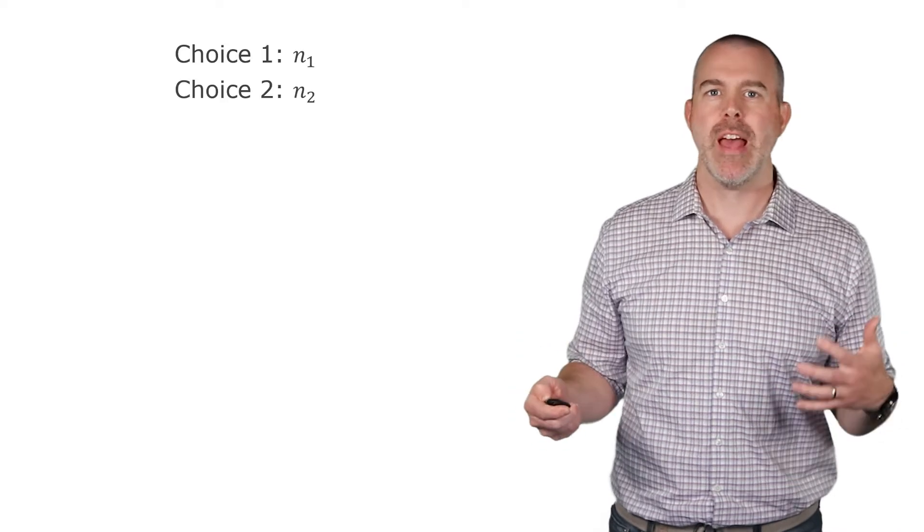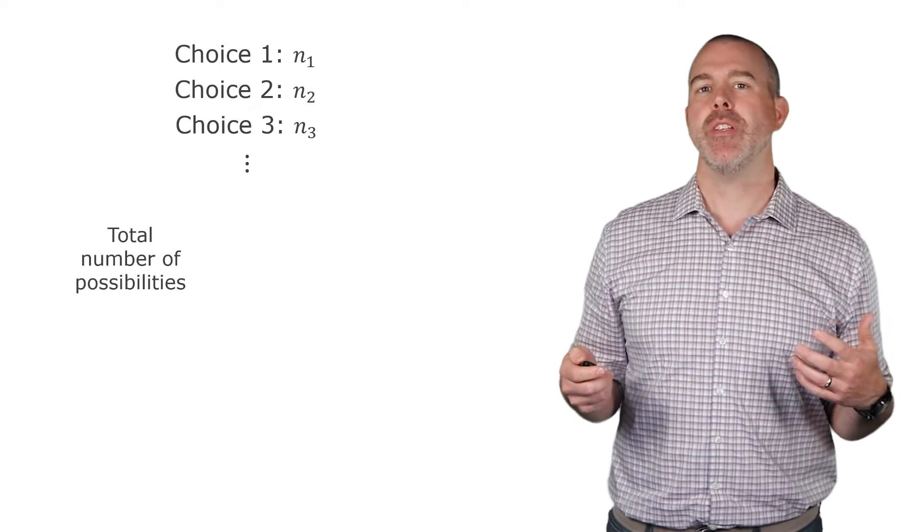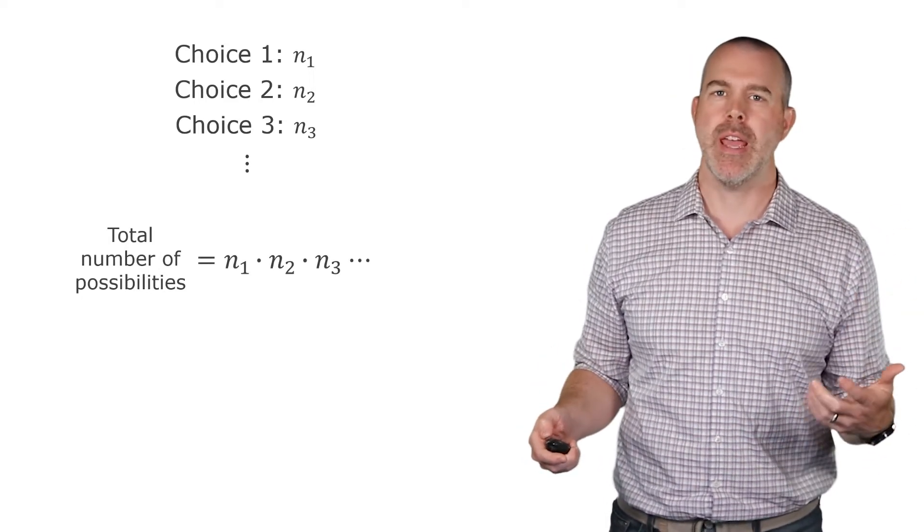If we wanted to generalize this, say we have choice one, there's n sub one ways to do that. Choice two, n sub two, choice three, n sub three, etc. Then the total number of possibilities, you would just multiply n1 times n2 times n3, etc.